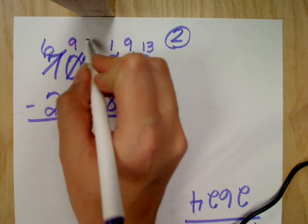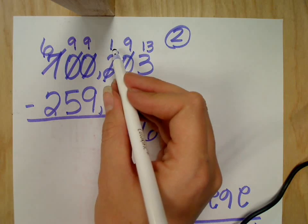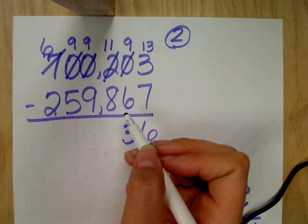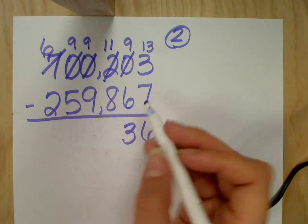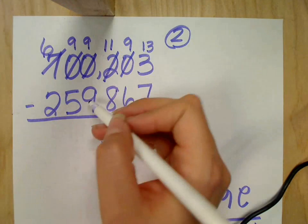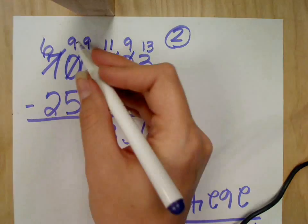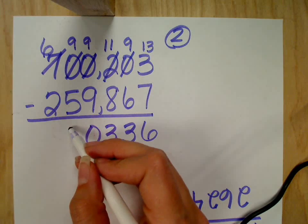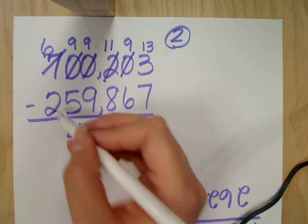Nines. Both of them. The one that gets the full value is this 11 now. So 11 take away eight? Three. Nine take away nine? Four. Nine take away five? Four. And six take away two? Four.